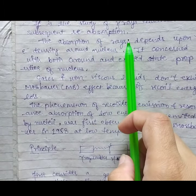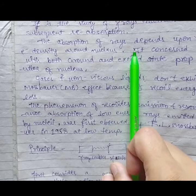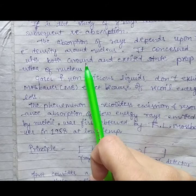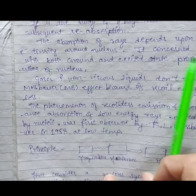The absorption of rays depends on electron density around the nucleus. It is concerned with both ground and excited state properties of nucleus.